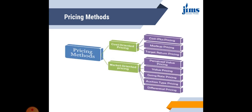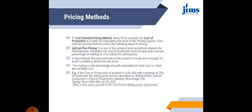Basically, pricing can be done in two ways: cost-oriented pricing and market-oriented pricing. These are further sub-categorized. Cost-oriented pricing includes cost plus pricing, markup pricing, and target return pricing. Market-oriented pricing includes perceived value pricing, value pricing, going rate pricing, auction type pricing, and differential pricing. Let us discuss all of these in detail one by one.